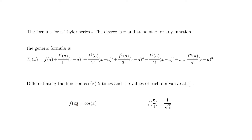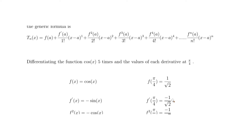We draw up a table. The function is cosine of x, and evaluated at π/4 it gives 1/√2. Using 1/√2 rather than √2/2 is far easier for Taylor polynomial calculations, as we'll see later. The first derivative of cosine is −sine, and −sine(π/4) = −1/√2.